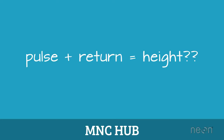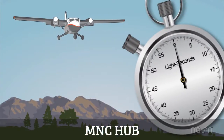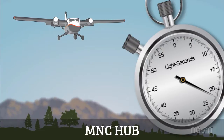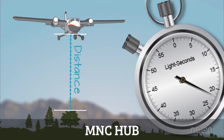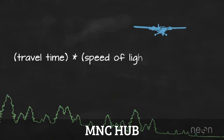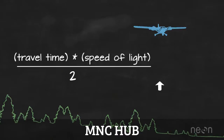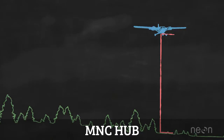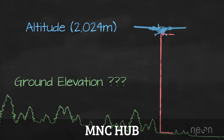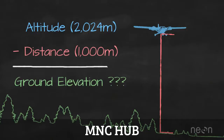To get height, the LIDAR system records the time it takes for the light energy to travel to the ground and back. The system then uses the speed of light to calculate the distance: travel time multiplied by the speed of light, divided by two since the light traveled to the ground and back. To find the actual elevation of the ground, we take the plane's altitude — calculated using the GPS receiver — and subtract the distance the light traveled to the ground.